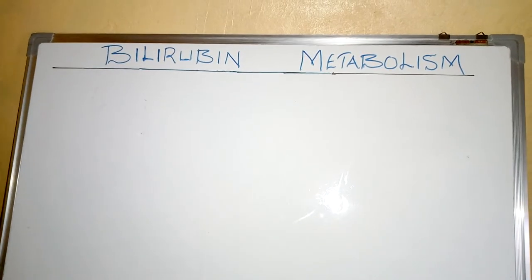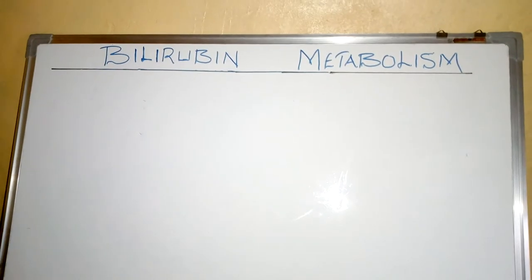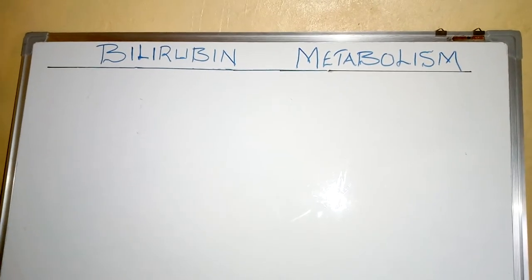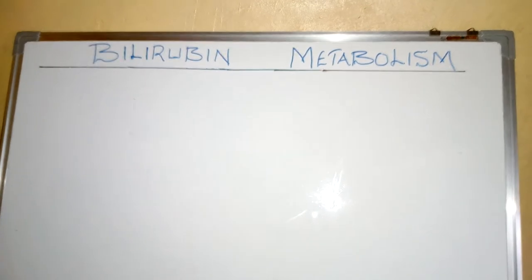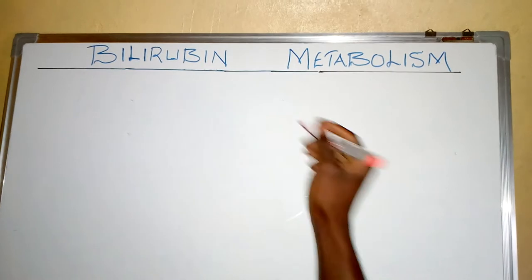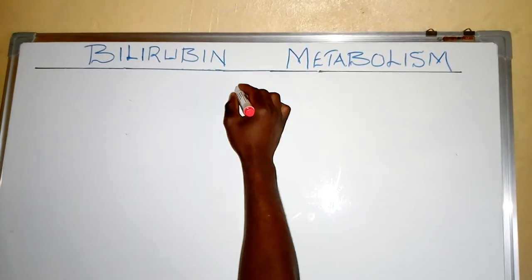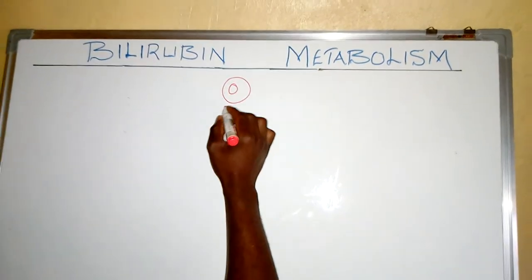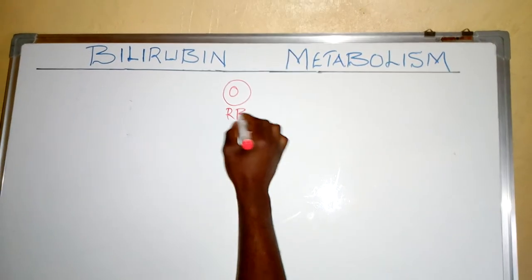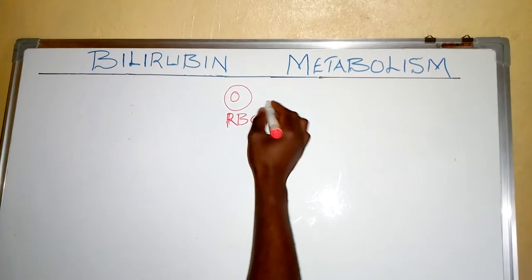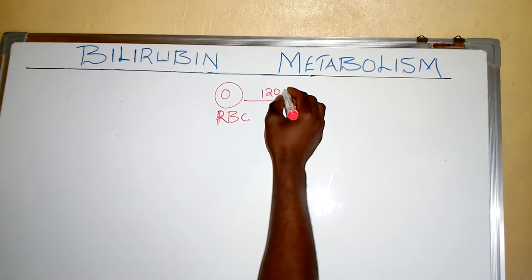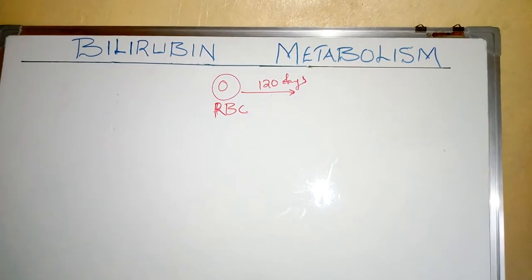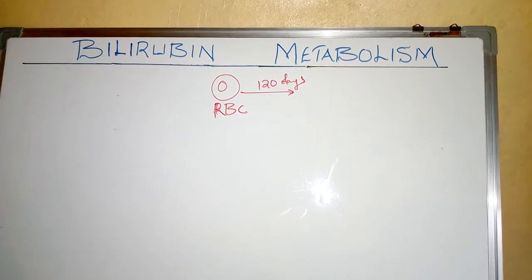Welcome. Today's video we're going to talk about the physiology of bilirubin. As you know, the lifespan of the red blood cell — also known as the erythrocyte — is about 120 days.